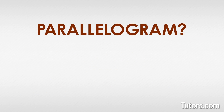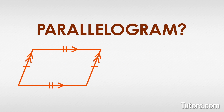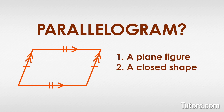What is a parallelogram? A parallelogram is a flat shape with four straight connecting sides so that opposite sides are congruent and parallel. This means a parallelogram is: 1. A plain figure, 2. A closed shape, and 3. A quadrilateral.